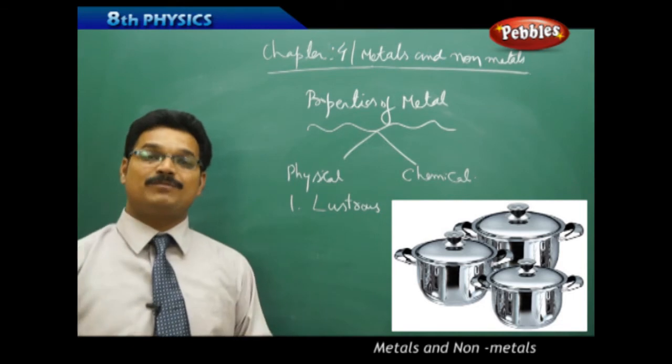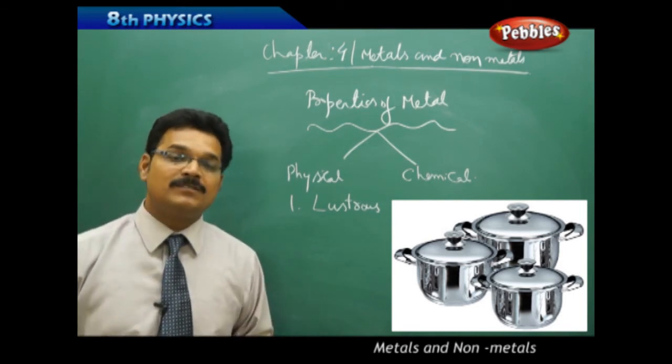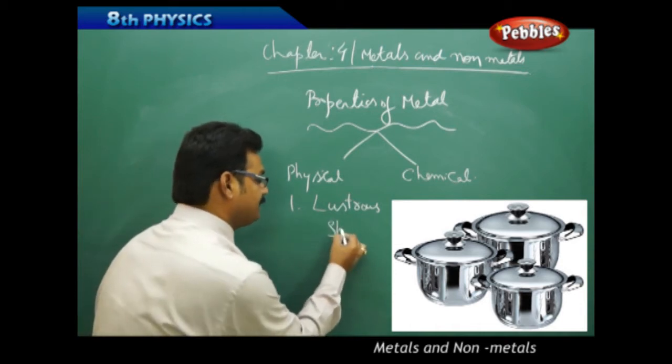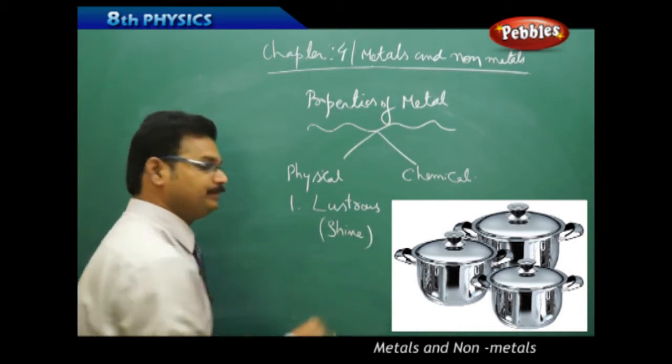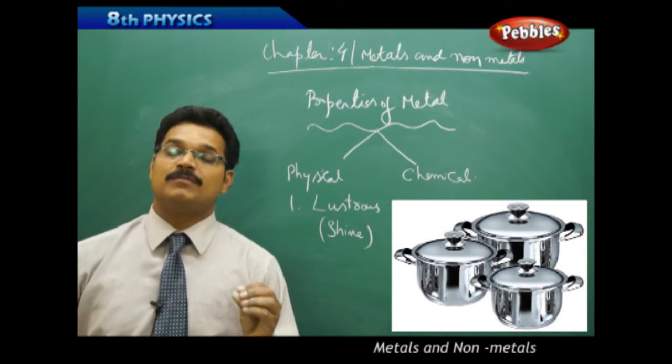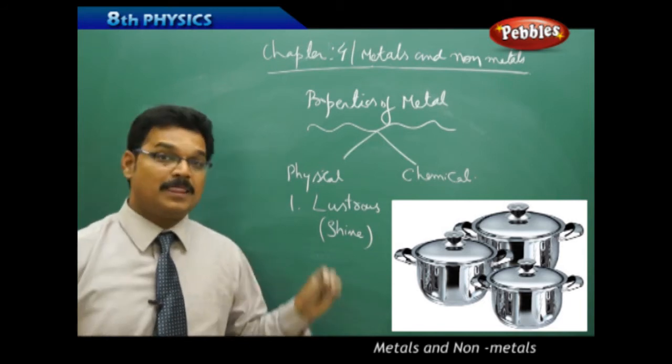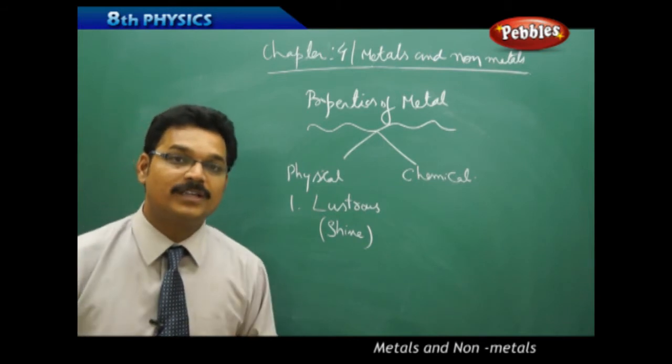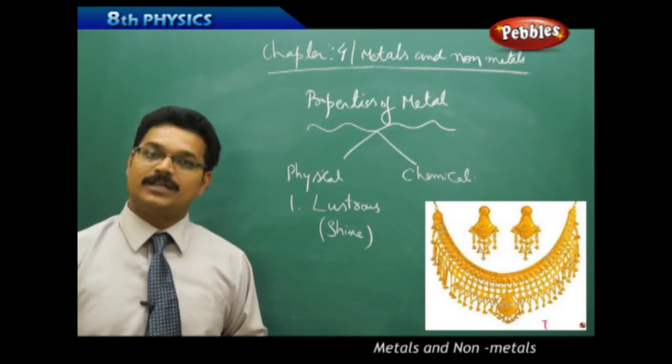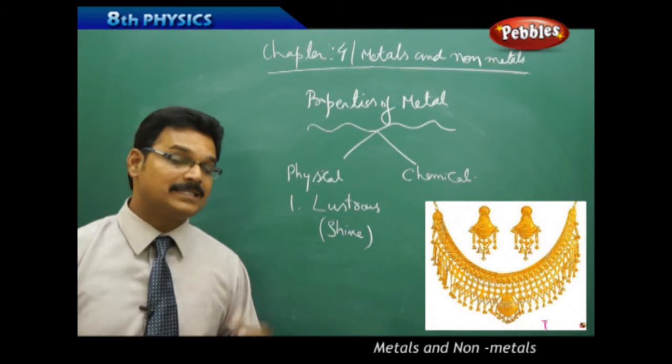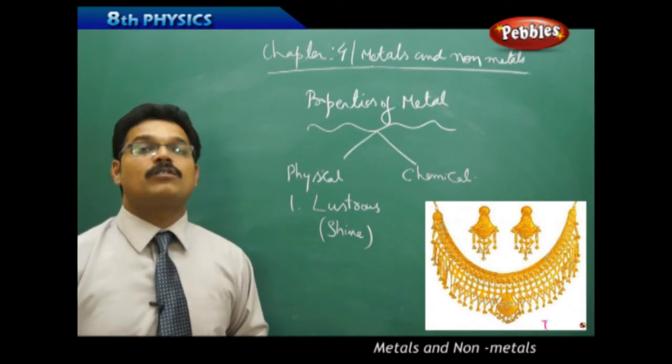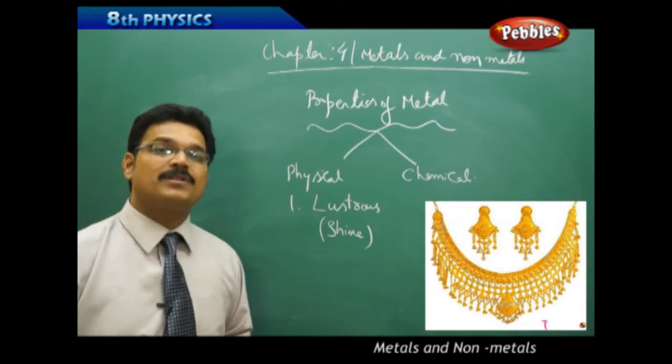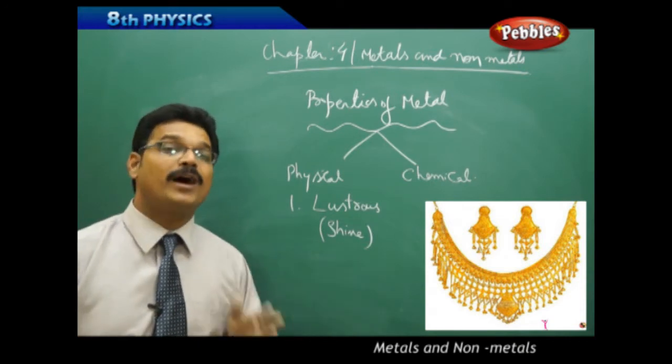What is lustrous property? Lustrous property means the metal which can shine. Materials which can shine are called lustrous materials. Generally, metals shine. Take gold jewelry - is it shining or not? Yes, it is shining. Take silver jewelry - is it shining or not? Yes, it is shining. So lustrous is a common property for metals, or it is a property to identify metals.